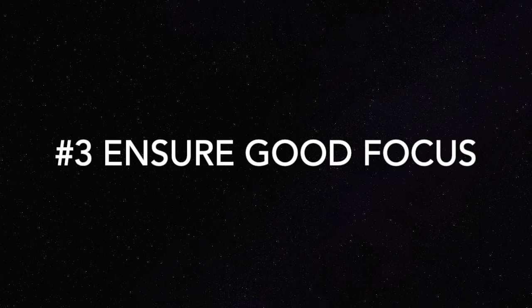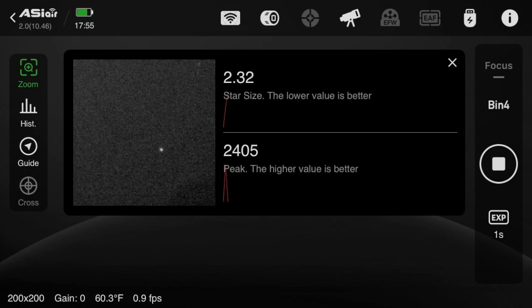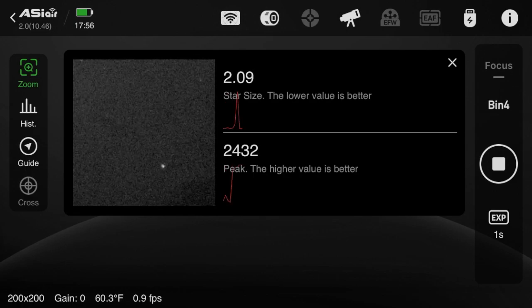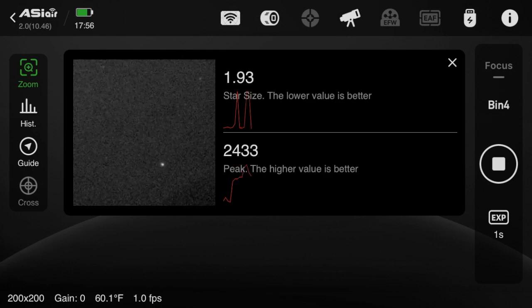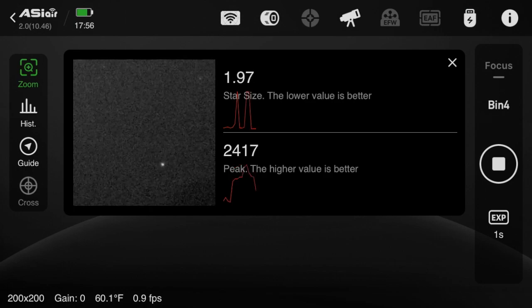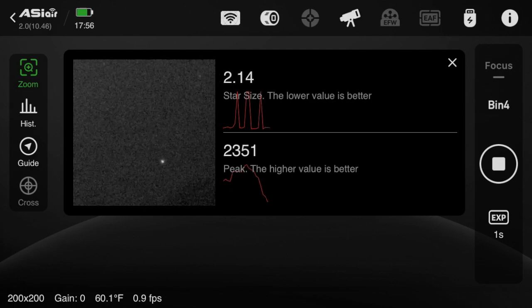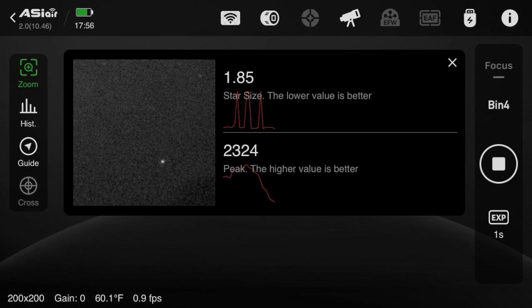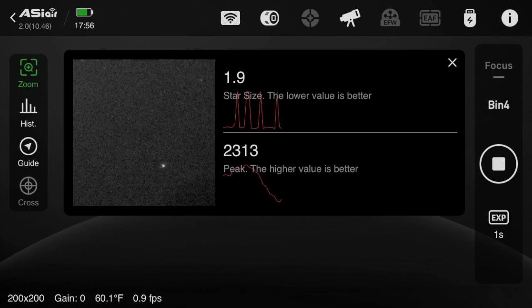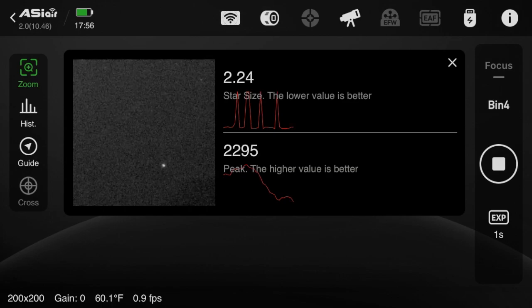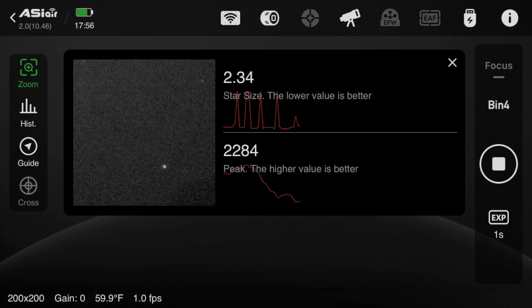Tip number three, ensure good focus. Now the other night I had an issue where I was losing the star and whatnot, and it turned out that I just simply did not have good focus. And so I recommend getting this pretty good with your guide cameras so that the software can clearly see what star it is. It may seem simple and maybe you don't think it's a big deal, but I have found that this does make a difference.